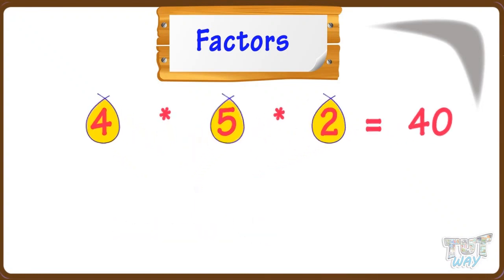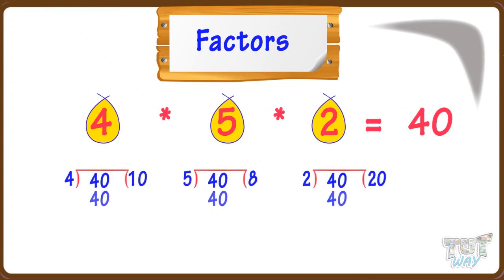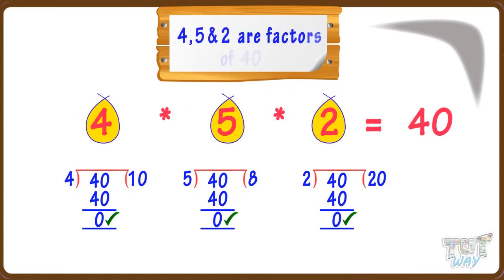A number is said to be a factor of another if it can divide the other number completely. Here, 4, 5, and 2 can divide 40 completely — that is, no remainder will be left if we divide 40 by 4, 5, or 2. So 4, 5, and 2 are factors of 40.